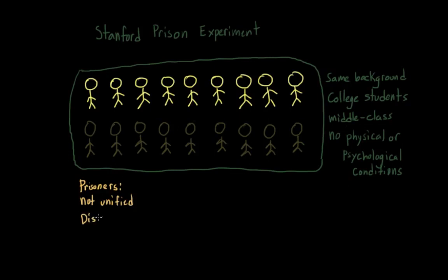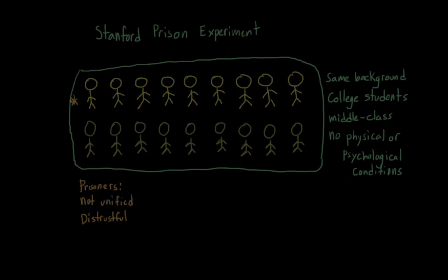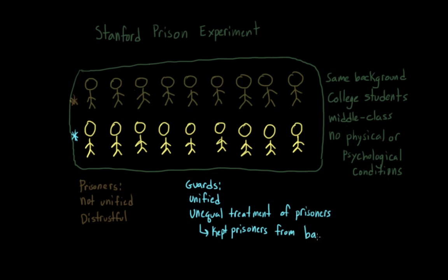In reality, the prisoners were pretty distrustful of each other. They saw each other as informants, and the guards' unequal treatment really didn't encourage solidarity. They tended to reward those who they saw as good prisoners by giving them different privileges, like better food, and by allowing them to keep their mattresses and to wash themselves or brush their teeth after they had punished the rebellious prisoners by taking those things away. And by giving privileges to some inmates and not others, the guards really broke any solidarity that the prisoners had.